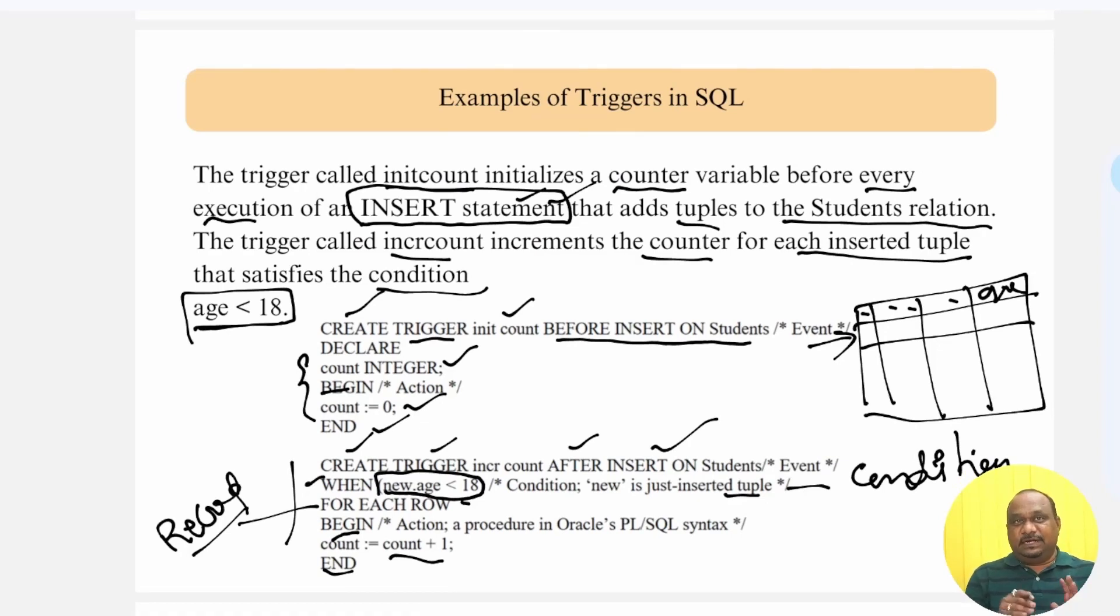From this, what you will get is, what is the trigger, what are the parts of the trigger, then how to write the trigger for the specified condition. Hope you understand this concept called triggers in the database. Thank you.